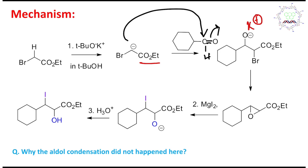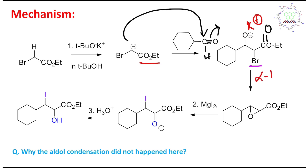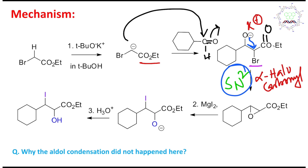If you look at the intermediate, there is one O-minus, and the next carbon contains a bromine — a good leaving group. If you look carefully, this is an alpha-halo carbonyl, because the ester carbonyl is present. We know alpha-halocarbonyls are more activated for SN2-type reactions because the transition state is stabilized by conjugation with the carbonyl group. So in the next step, the O-minus acts as a nucleophile and through an intramolecular SN2-type reaction, it produces a three-membered ring — an epoxide.